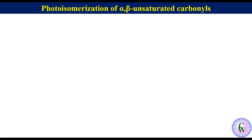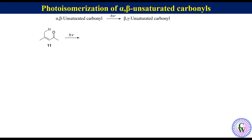Photo-isomerization of alpha-beta unsaturated carbonyls. Cyclic alpha-beta unsaturated carbonyl compounds upon irradiation get converted to the beta-gamma unsaturated carbonyl isomer. For example, compound 11. It has gamma hydrogen which upon irradiation gets abstracted by the carbonyl oxygen to produce a 1,4-diradical, which after electronic rearrangement gives a conjugated dienol that undergoes tautomerization to produce the beta-gamma unsaturated ketone.